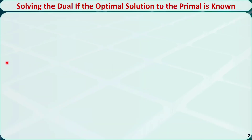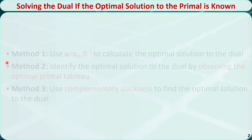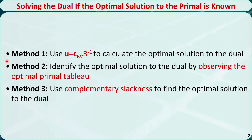In the previous videos, we talked about how to solve the dual if we already know the optimal solution to the primal. We can use three methods. Method 1: use a formula to calculate the optimal solution to the dual. Method 2: identify the optimal solution to the dual by observing the optimal primal tableau. Method 3: use complementary slackness to find the optimal solution to the dual.